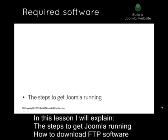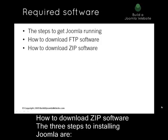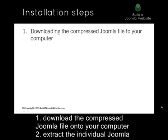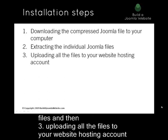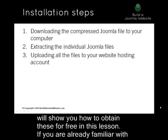In this lesson I'll explain the steps to get Joomla running, how to download FTP software, and how to download ZIP software. The three steps to installing Joomla are: one, download the compressed Joomla file onto your computer; two, extract the individual Joomla files; and three, upload all the files to your website hosting account. This process requires you to have FTP and ZIP software installed on your computer, and I'll show you how to obtain these for free in this lesson.